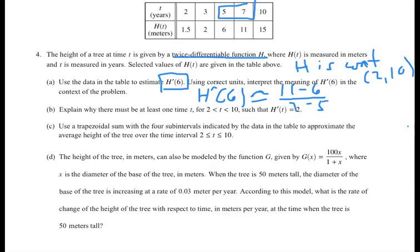It says, using correct units, interpret the meaning of h prime of 6. So 11 minus 6 is the y, so that is meters. The bottom is years. So what that means is this tree is growing. h is the height of the tree. So the approximate rate of growth of the tree at 6 years is 11 minus 6 over 2 meters per year, which if you want to simplify would be 5 halves or 2 and a half meters per year at when t equals 6. You would definitely want to say at t equals 6 years. That's part A.